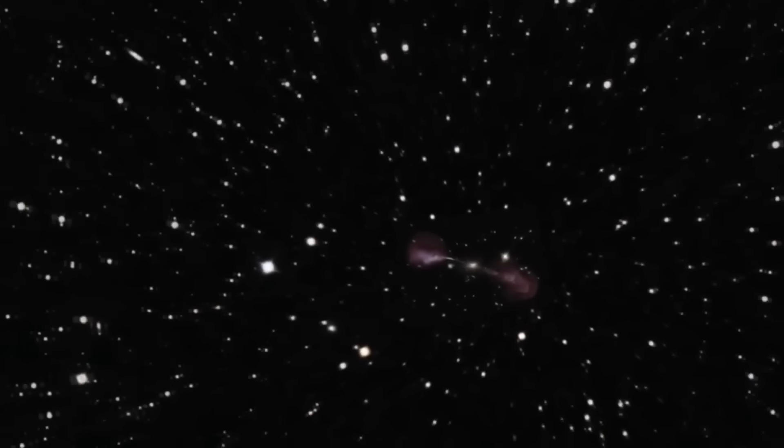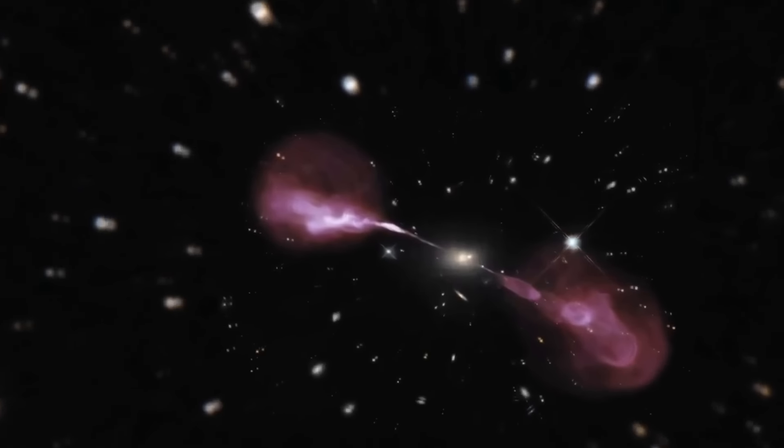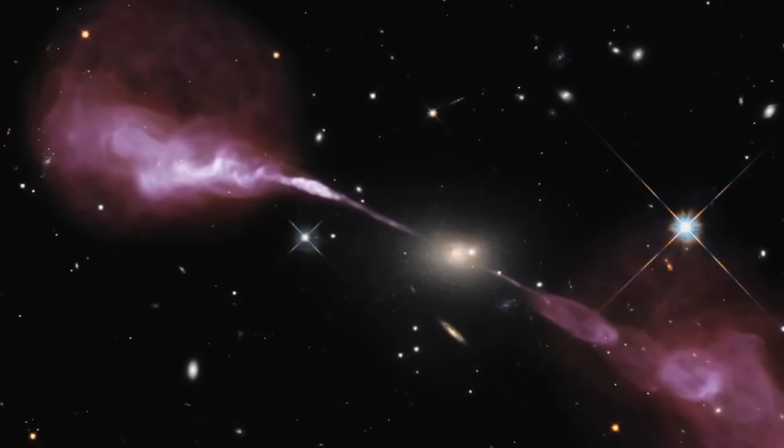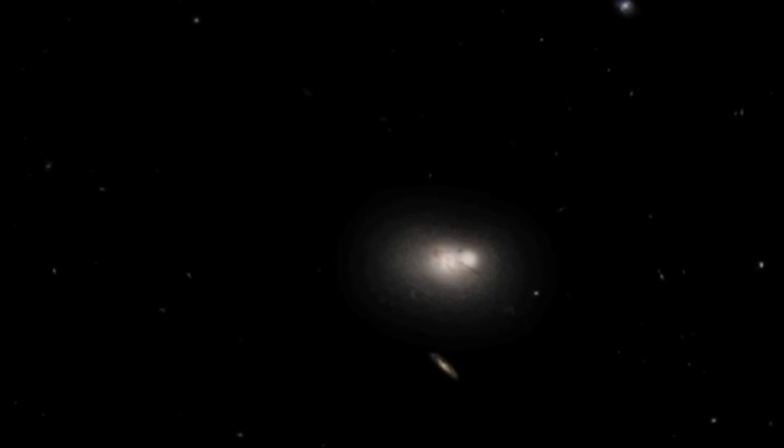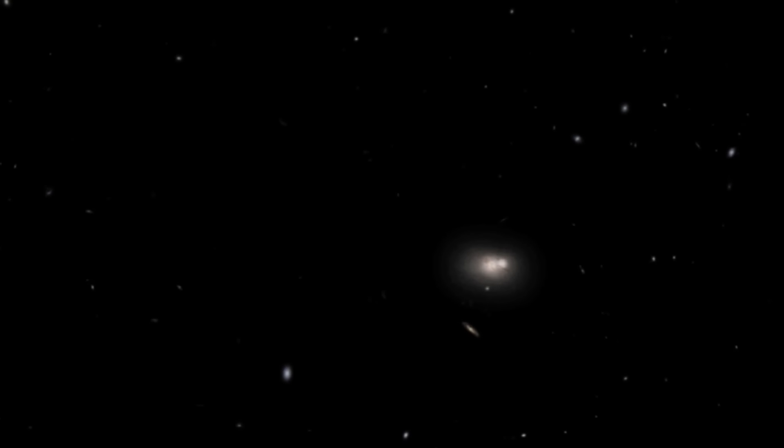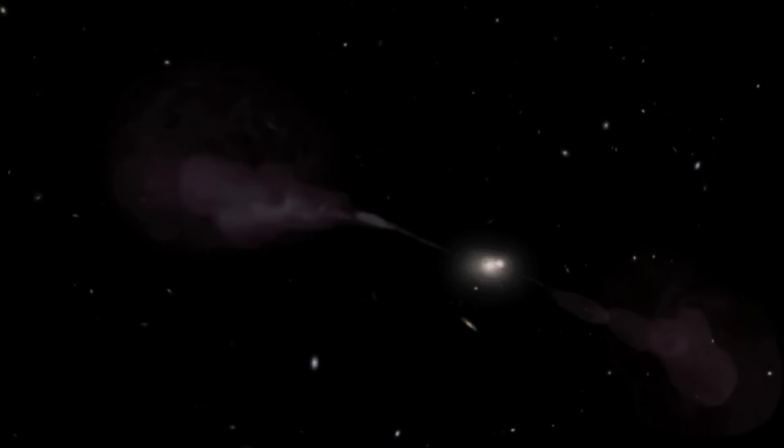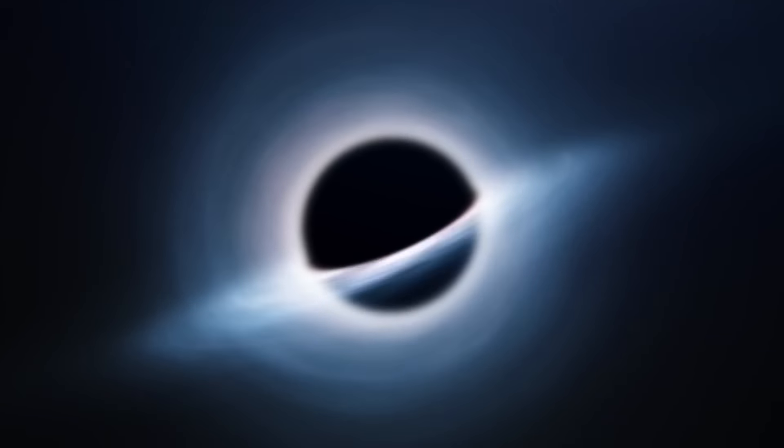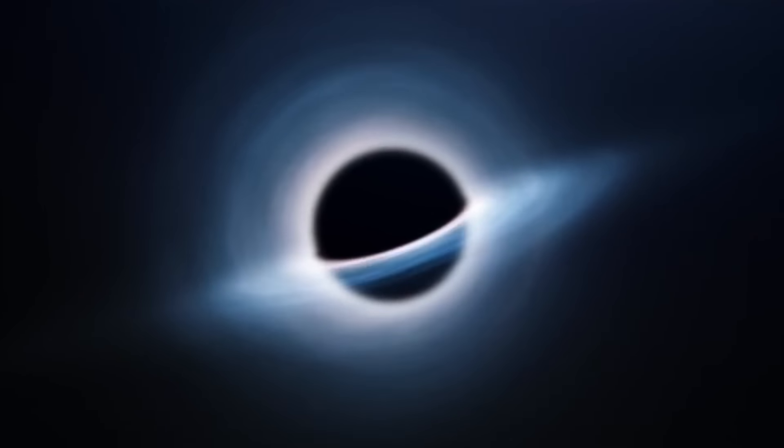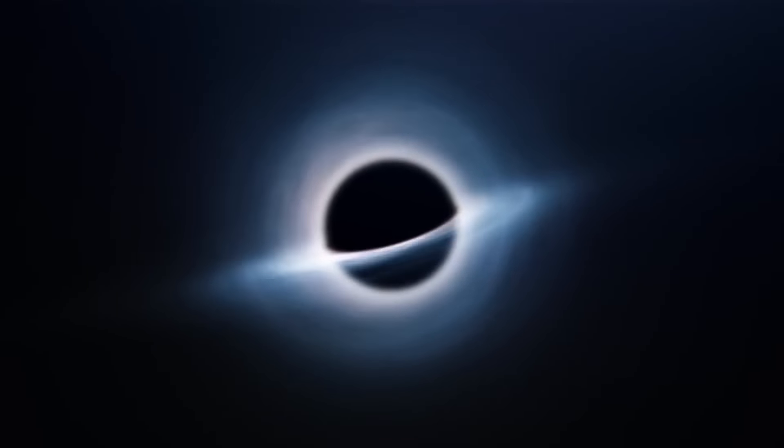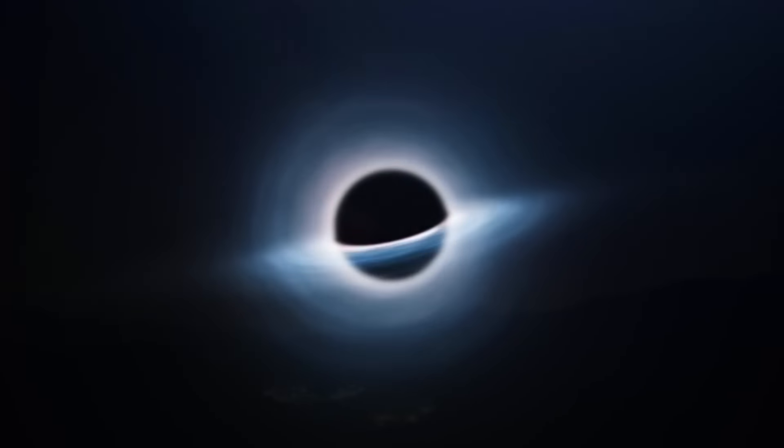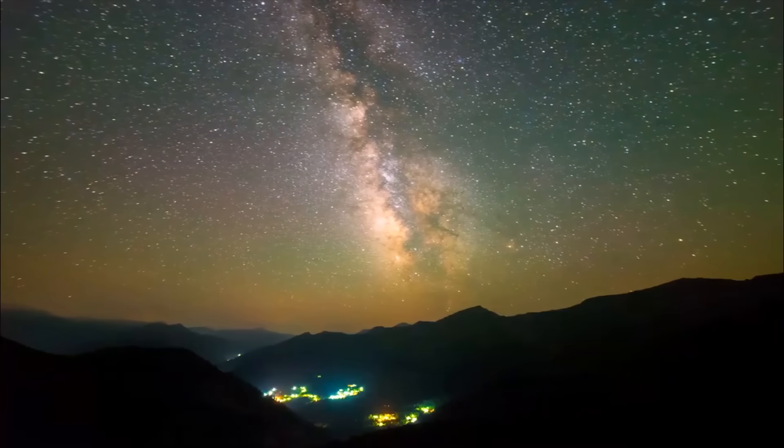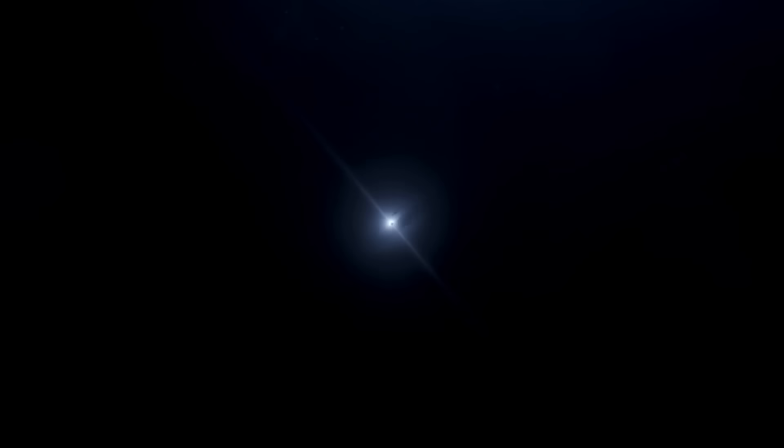So, fifth place in our galactic parade is taken by 3C348 of Hercules A, a yellowish galaxy with a diameter of 1.5 million light-years at a distance of about 2 billion light-years. Hercules A is one of the brightest extra-galactic radio sources. The galaxy is about 1,000 times more massive than the Milky Way, and Hercules A contains a black hole that is also 1,000 times more massive than the black hole at the center of our galaxy.